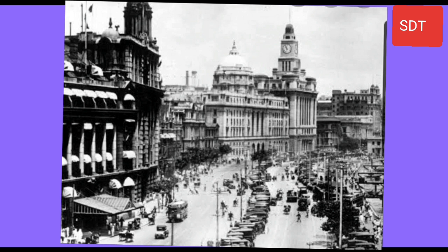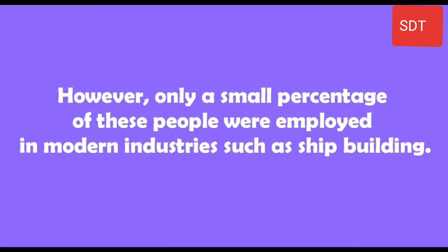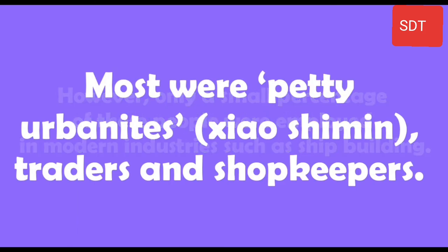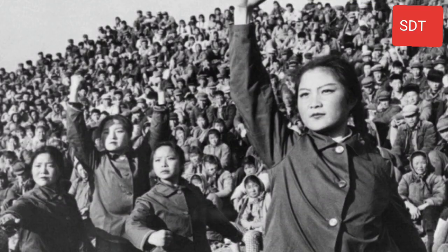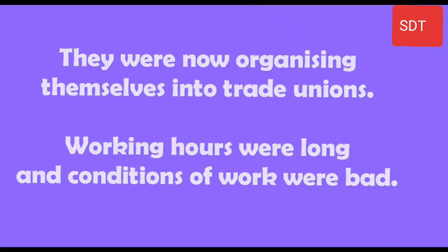However, only a small percentage of these people were employed in modern industries such as shipbuilding. Most were petty urbanites, traders and shopkeepers. Urban workers, particularly women, earned very low wages and were organizing themselves into trade unions. Working hours were long and conditions of work were bad.